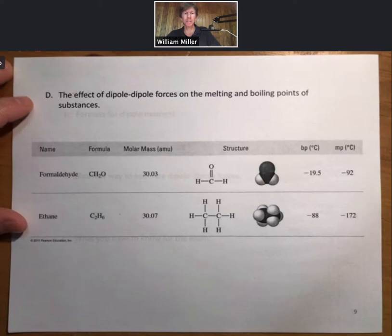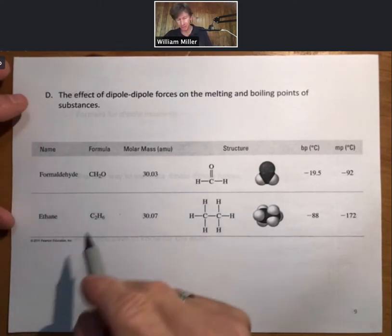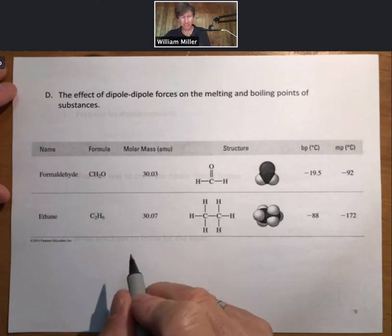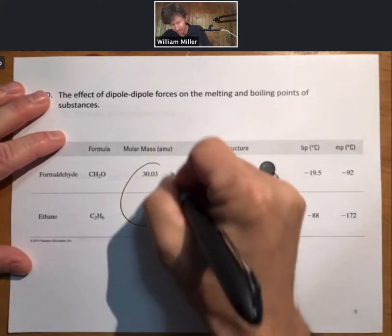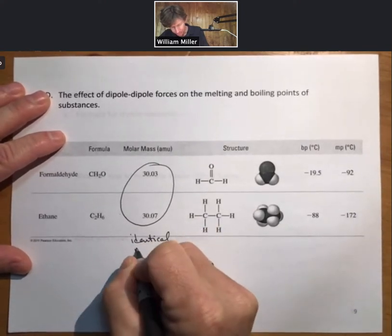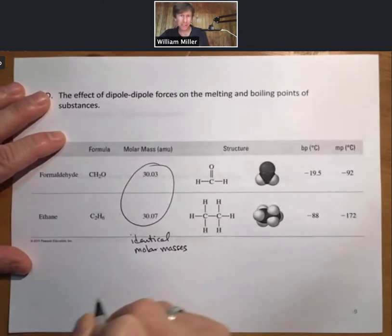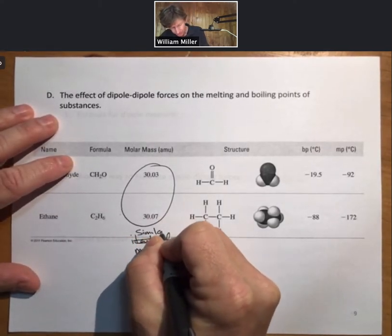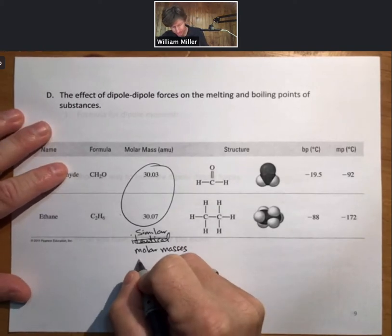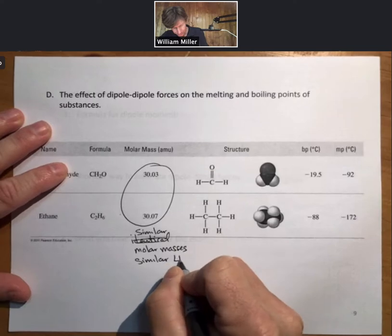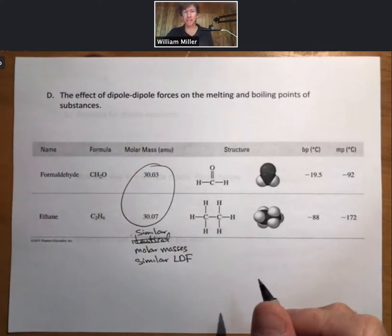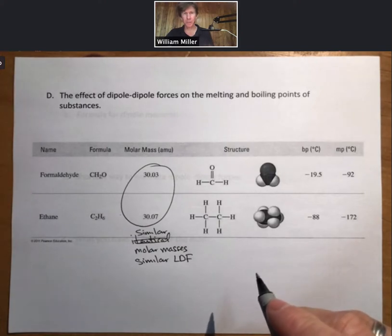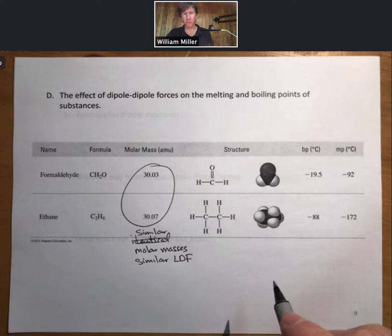Now, the effect of dipole-dipole forces on the melting and boiling points of substances. We have two substances here with their molar masses, which are almost identical. I would call these identical. So identical molar masses. So the LDF for these two molecules are likely to be very similar. So that when we see differences in the boiling and melting points, it's not due to LDF. We're picking out an example where dipole-dipole forces are important.